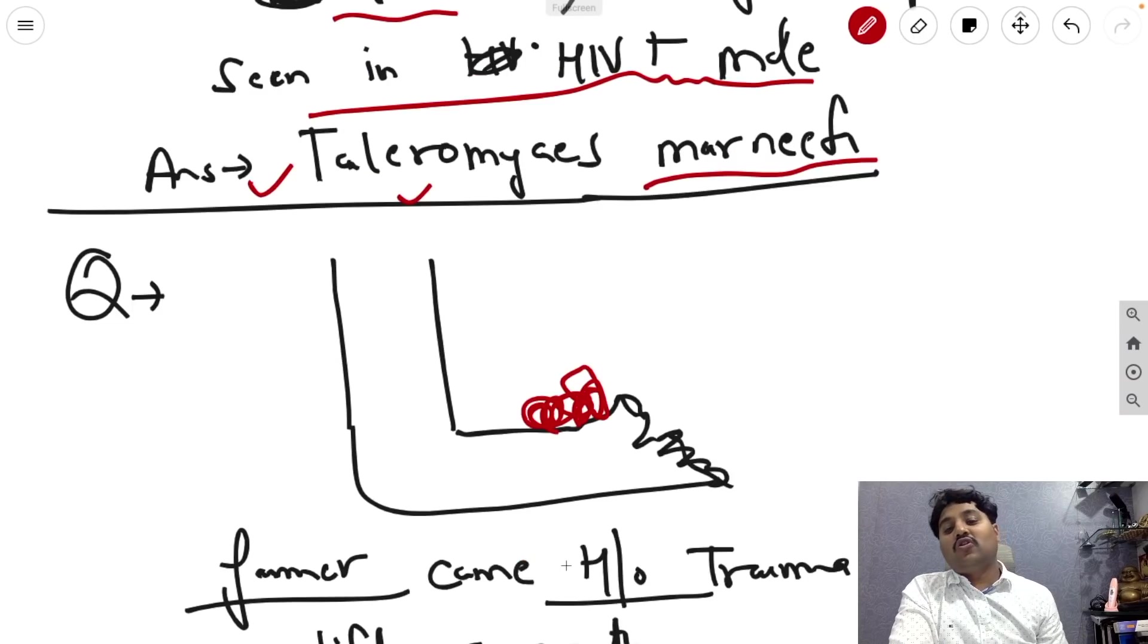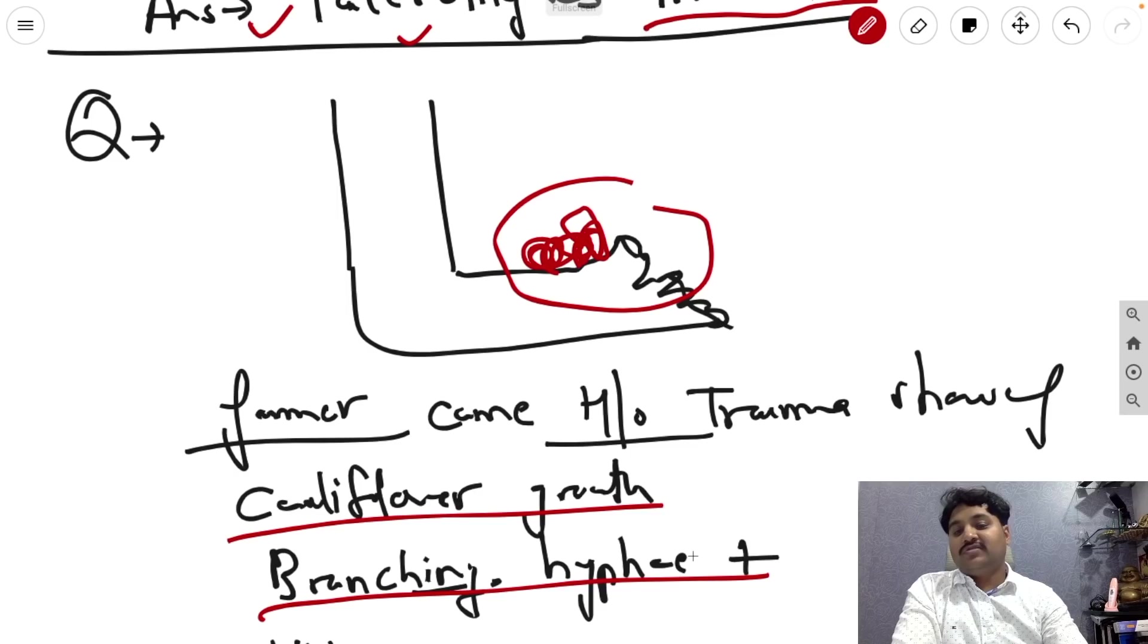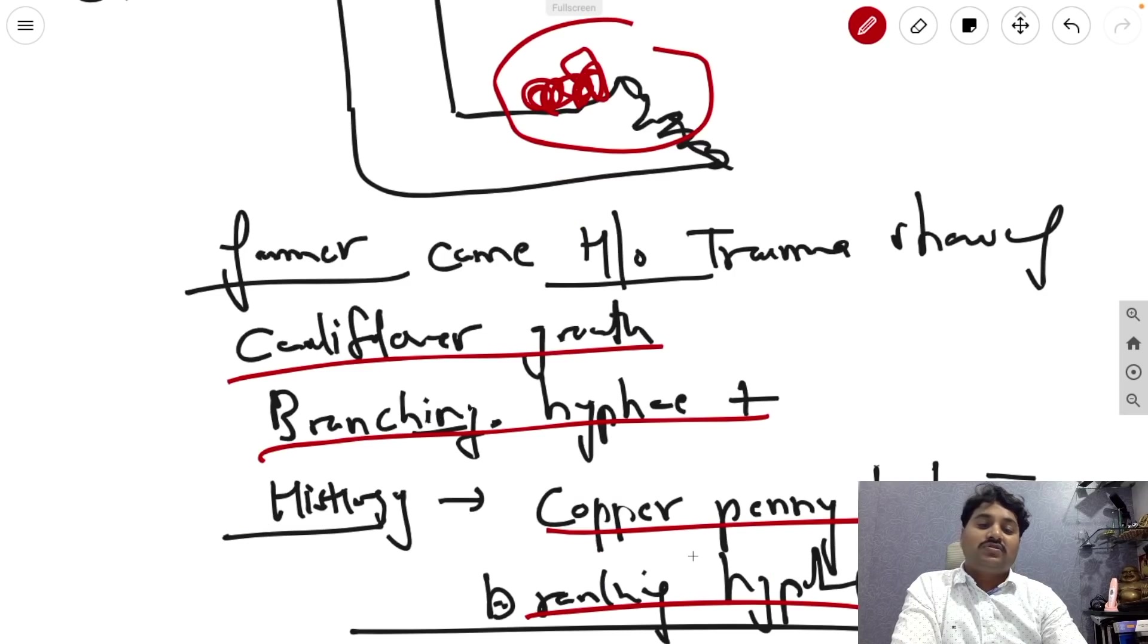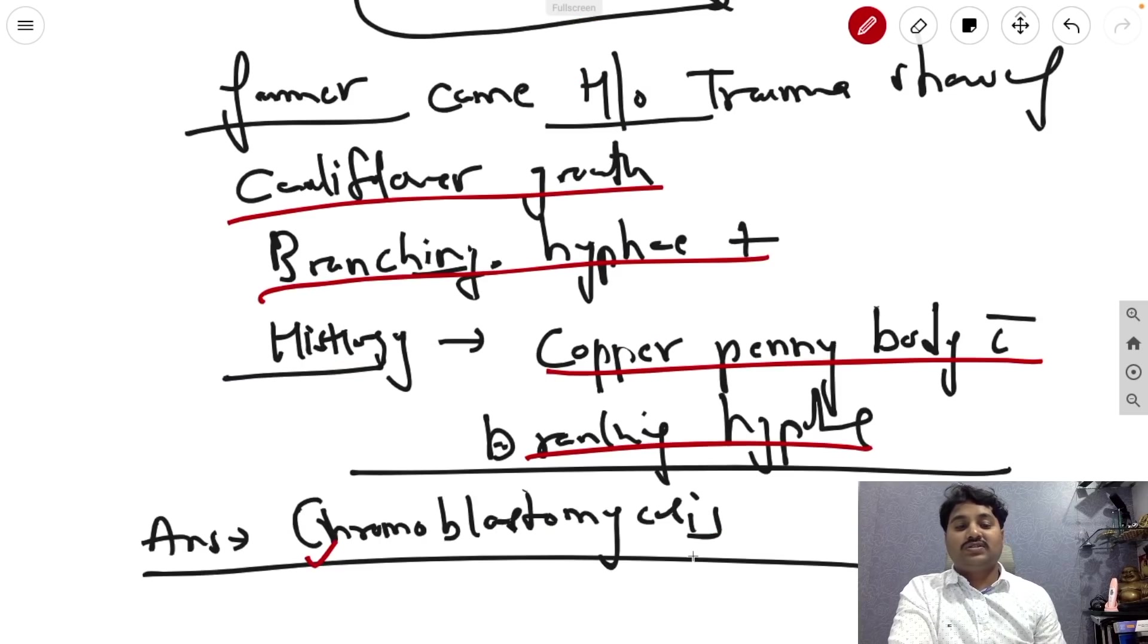Now again a very bad image showing the cauliflower growth appearance over the foot in farmer having history of trauma. Branching hyphae is seen. Histology also shows a copper penny body with branching hyphae, so the answer is chromoblastomycosis.